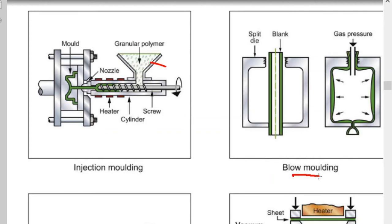In blow molding, we have a die whose inside is the required shape. A blank is provided at the center and gas pressure is blown into it. As the gas is blown in, it expands and touches the inner surface of the die, taking its shape. Thus the cast is made.